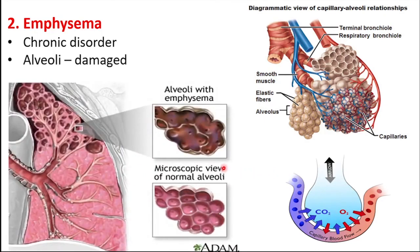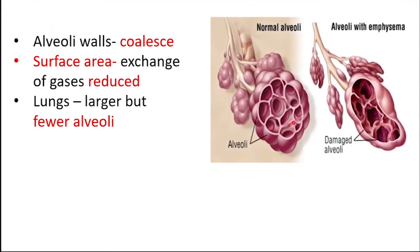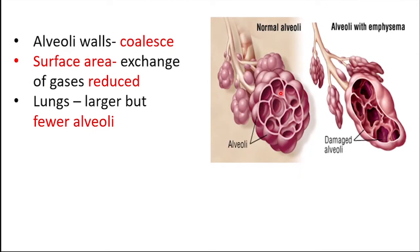In case of emphysema, the alveoli of lungs are damaged. The walls of the alveoli coalesce and unite into a hole. Many alveoli fuse to form single larger spaces. Here, many alveoli coalesce and form few alveoli, so the respiratory surface area is decreased. The surface area for the exchange of gases is reduced. The lungs show larger but fewer alveoli and they become more fibrous and less elastic.